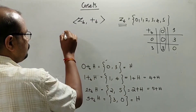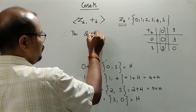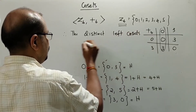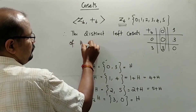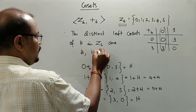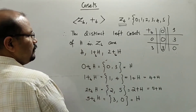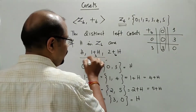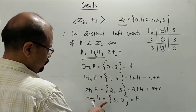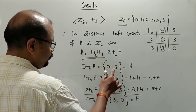Therefore the distinct left cosets of H in Z6 are: H, 1+H, and 2+H. The elements covered are 0, 1, 2, 3, 4, and 5, which together partition Z6.